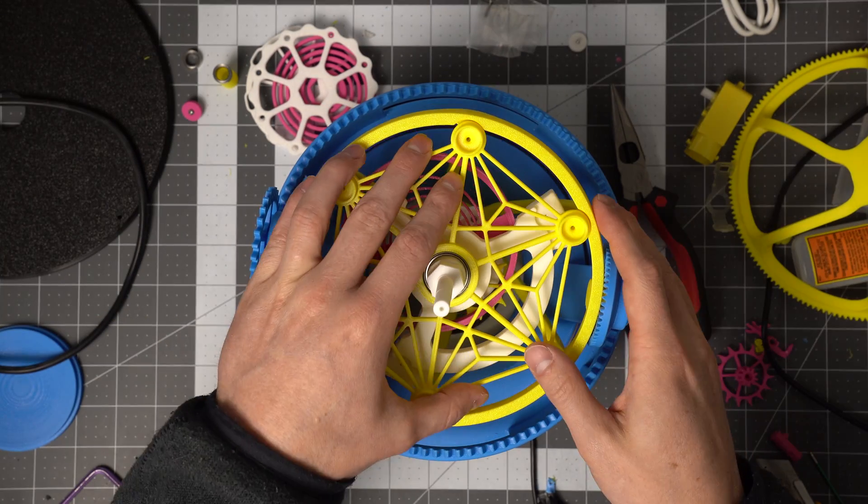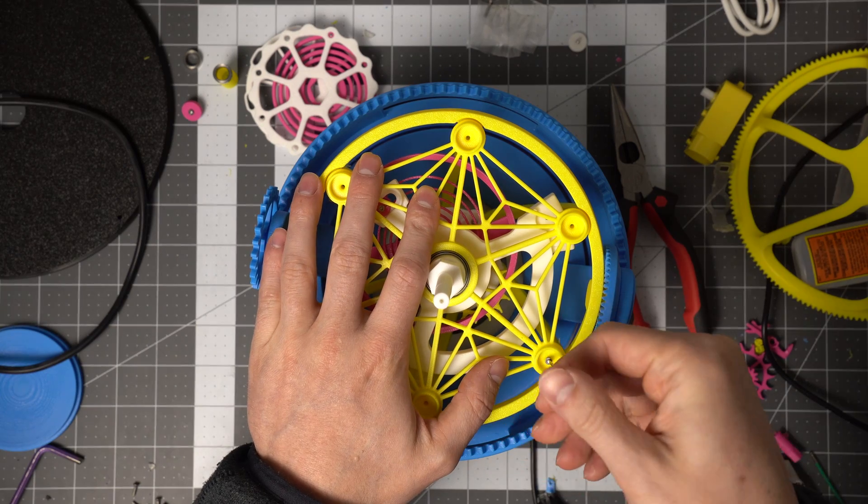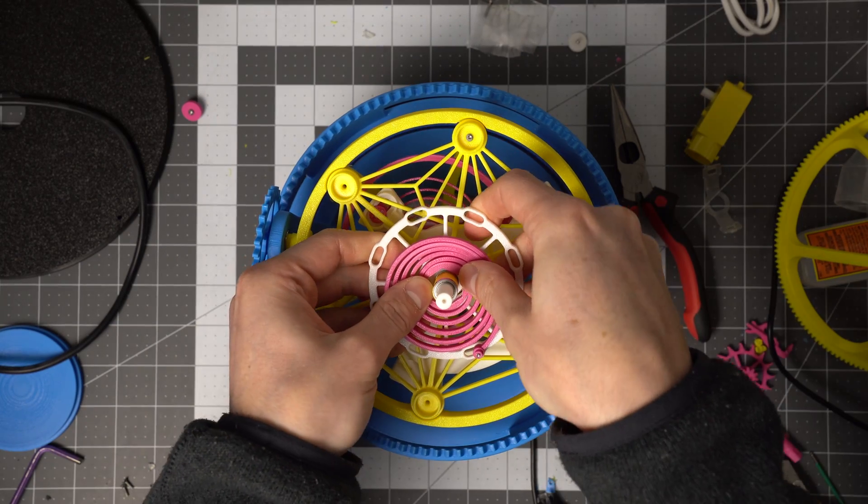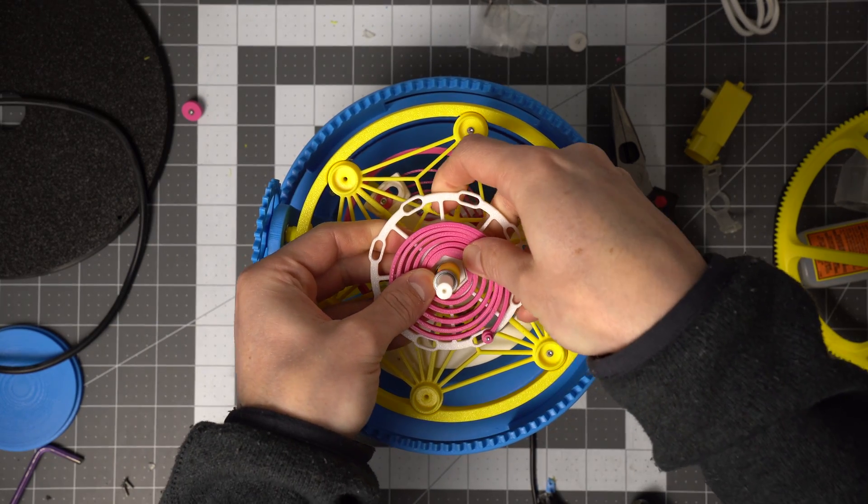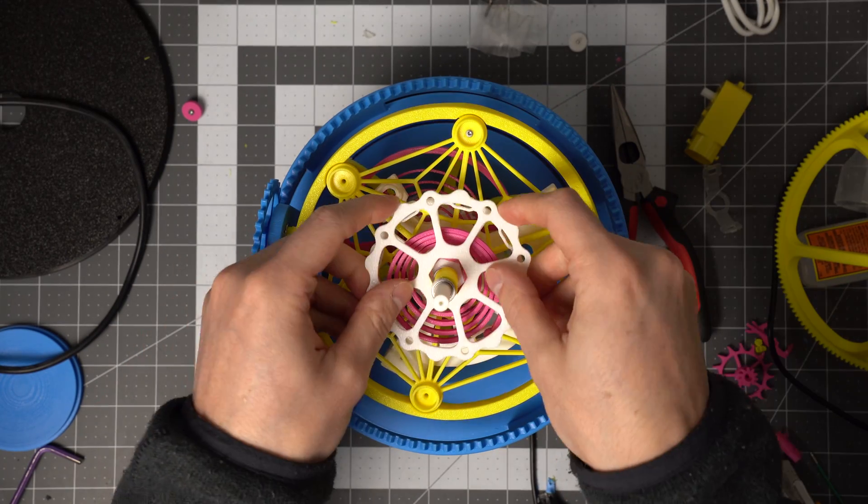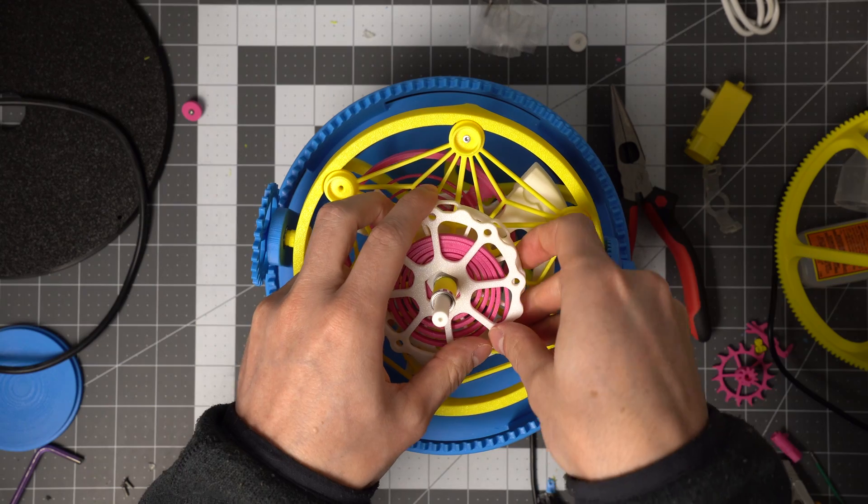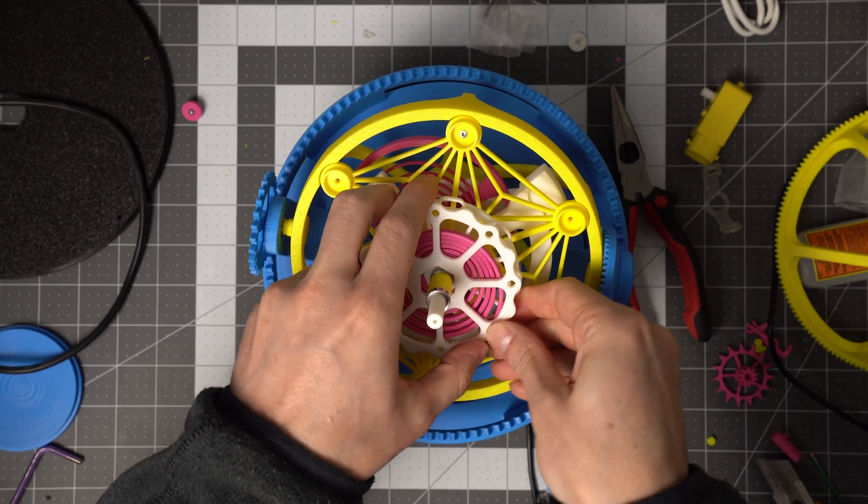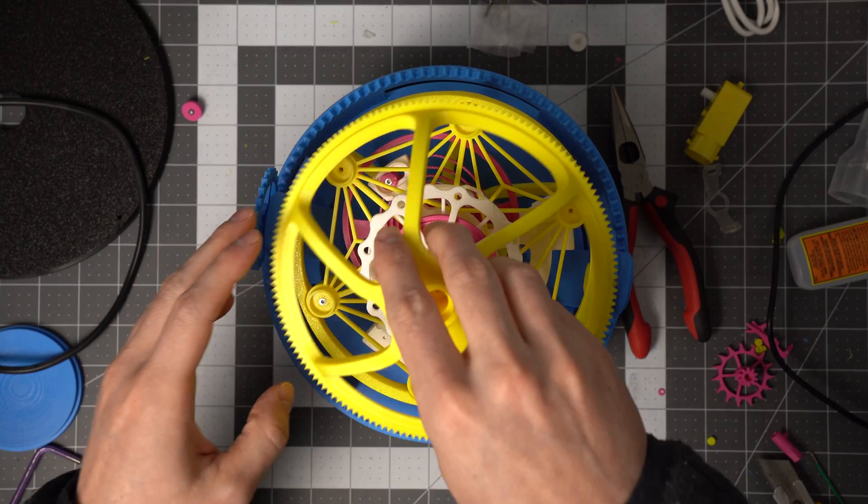I recommend only using a couple screws on this part initially, because you are probably going to have to take it apart a couple times to get this thing right. But you'll just have to do these steps in reverse if you want to get back to that escapement mechanism and make any adjustments.